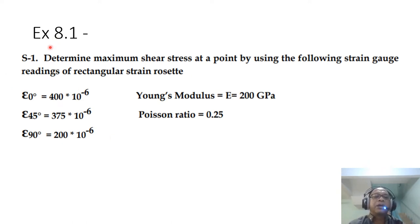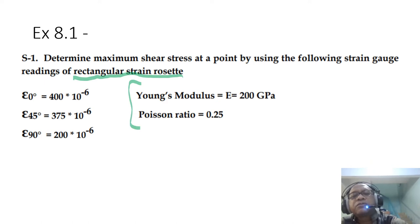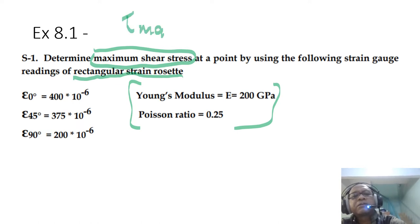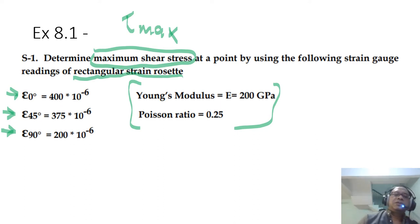Let's do one example. The question asks: determine the maximum shear stress at a point using the following strain gauge readings of a rectangular strain rosette. Young's modulus is given, and we want to find tau max. The strain at 0 degrees is 400 microstrain, at 45 degrees is 375 microstrain, and at 90 degrees is 200 microstrain.